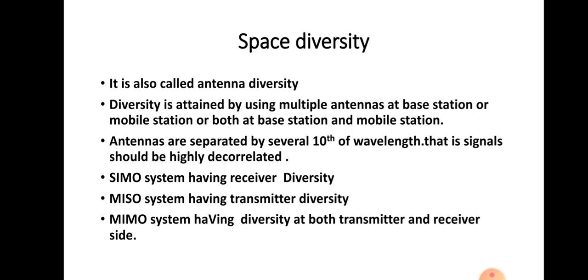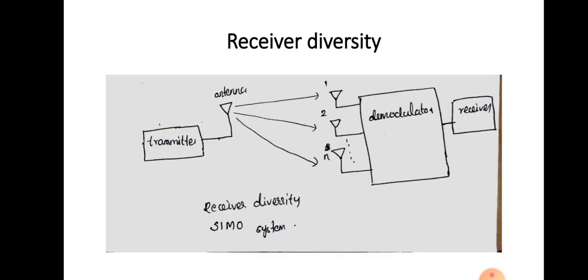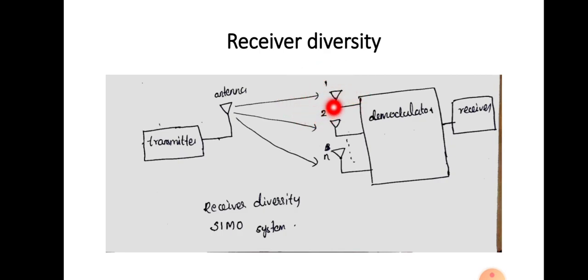The basic requirement is that antennas used at the transmitter or receiver side should be separated by several tenths of a wavelength. Only then will the signals received at different antennas be highly decorrelated. For the diversity technique to apply, each receiver antenna must receive the signal with a different fading status, and the fading effect on each channel must be decorrelated by choosing the antenna separation to be several tenths of the wavelength.